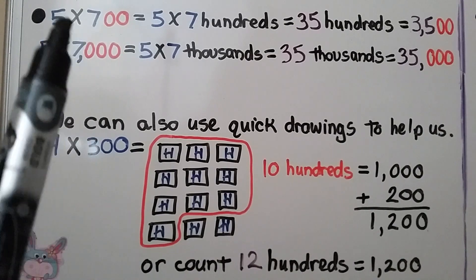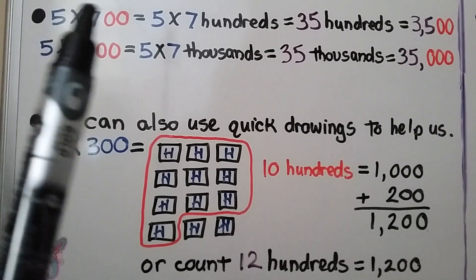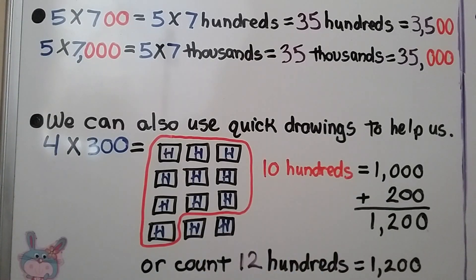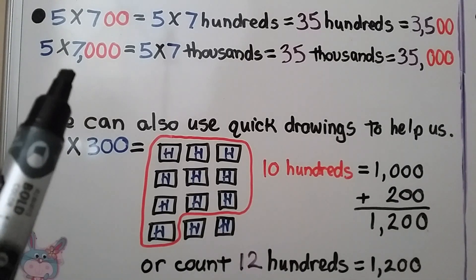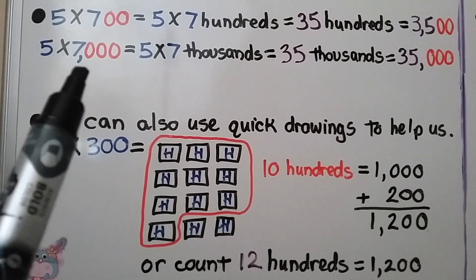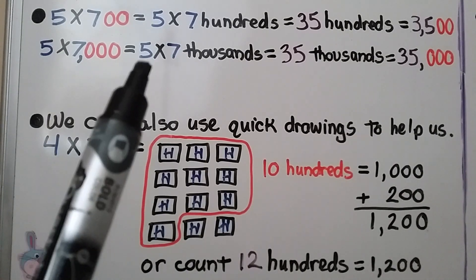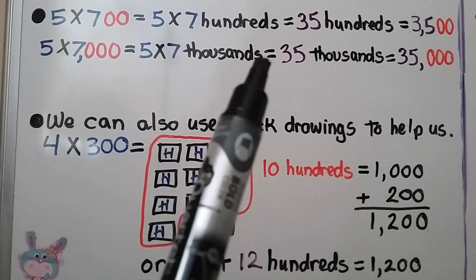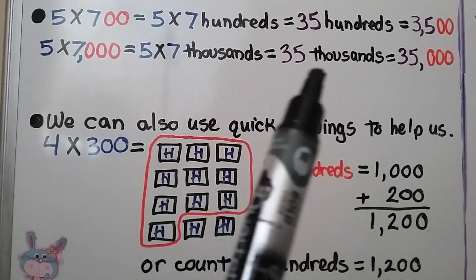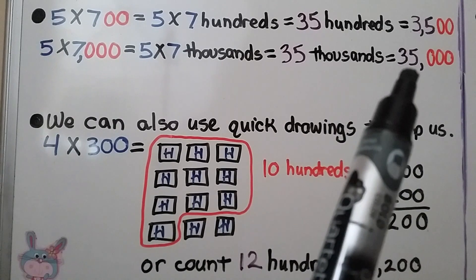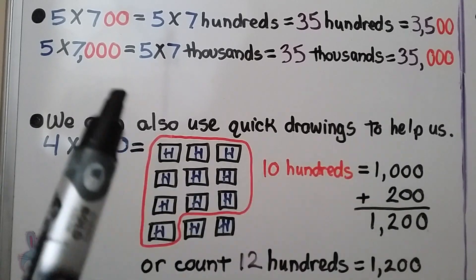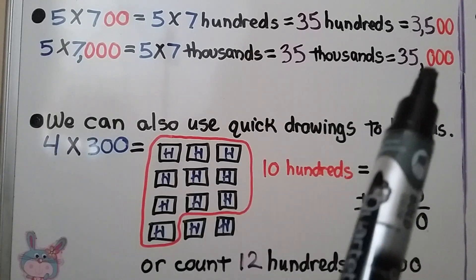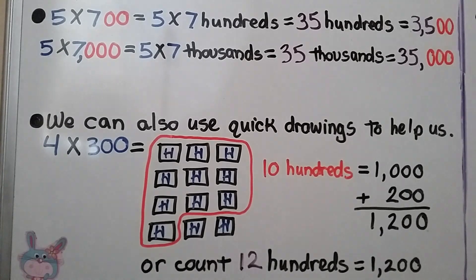We had two zeros in all of the factors, so there are two zeros in the product. 5 times 7 thousands — now we have three zeros. That equals 5 times 7 thousands, which equals 35 thousands. We had three zeros in the factors, so we have three zeros in the product.